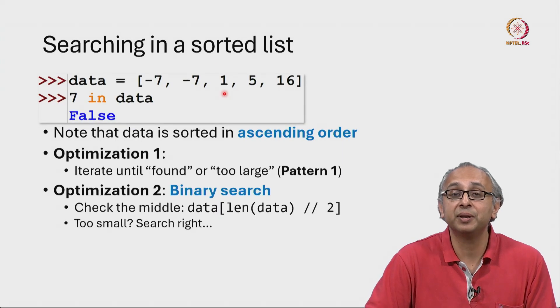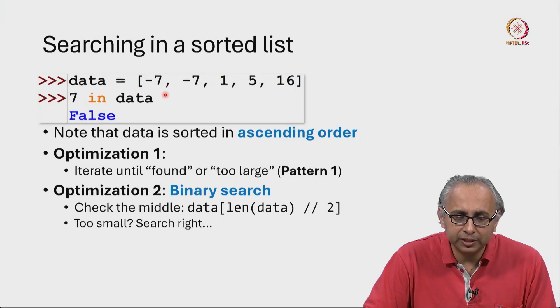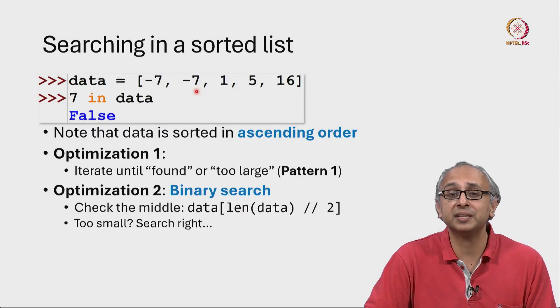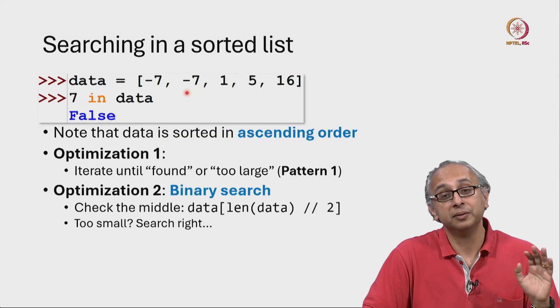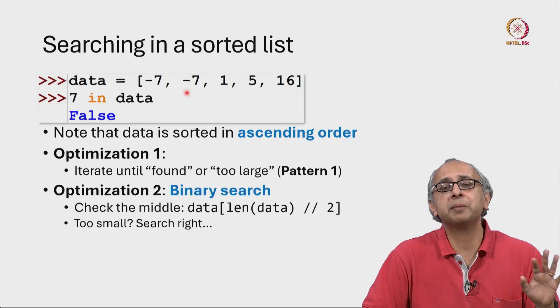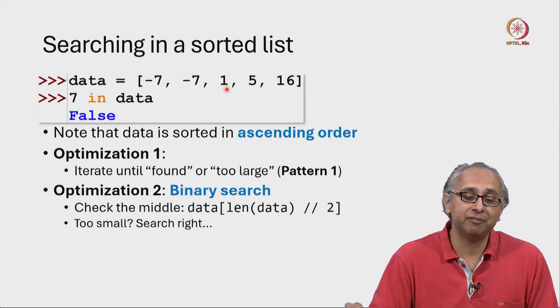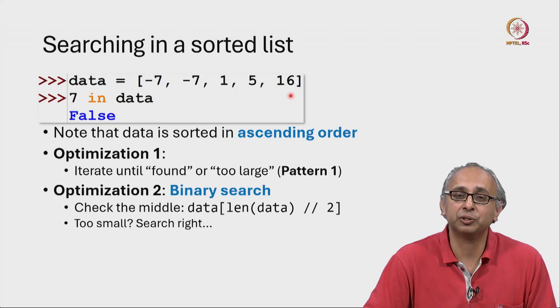So here we are looking for 7, but the value that we see in the middle is too small—it's much less than 7. And now we say there is no point searching to the left, because remember, this list is sorted in ascending order. So the values to the left are either strictly smaller or at most equal to the value that we are looking at. And since we are looking for a bigger value, we should search to the right.